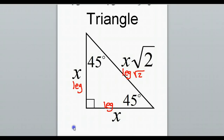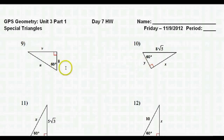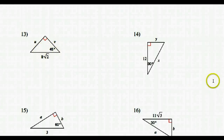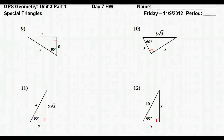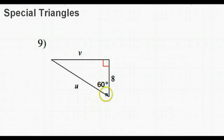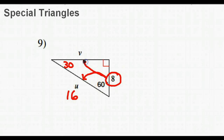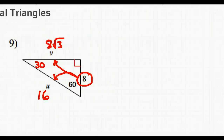In this assignment, 30-60-90 triangles will be mixed in with 45-45-90 triangles, so be ready for that. Starting with number 9 — it's all about the short leg. We see this is the 60-degree angle, so this is the short leg across from the 30. The hypotenuse is double the short leg, so that's 16. The long leg is short times radical 3, so that's 8 radical 3. So u is 16 and v is 8 radical 3.